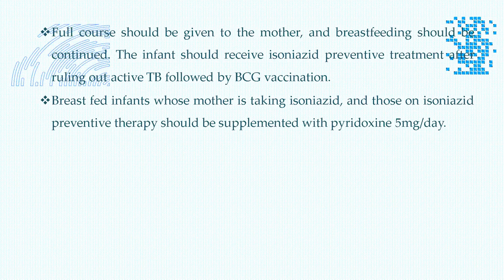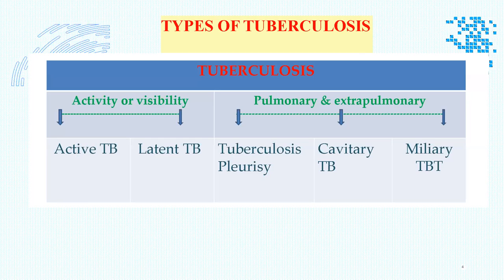Types of tuberculosis can be classified by activity — active TB and latent TB — or by location: pulmonary or extrapulmonary. Pulmonary forms include tuberculosis pleurisy, cavitary tuberculosis, and miliary tuberculosis. In pleurisy, the granuloma at the edge of the lung ruptures into the pleural space, spreading to the entire chest wall and causing inflammation of the pleural sacs with fluid accumulation, leading to shortness of breath.